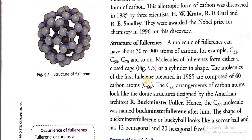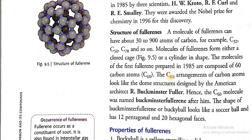So the first fullerene that was prepared has got 60 carbon atoms, C60. The C60 arrangement of carbon structures designed by the American architect R. Buckminster Fuller.